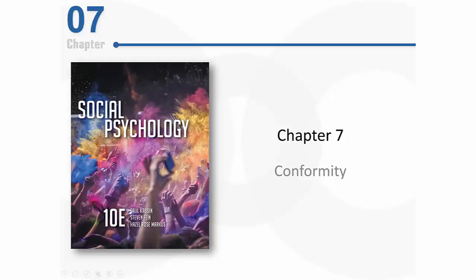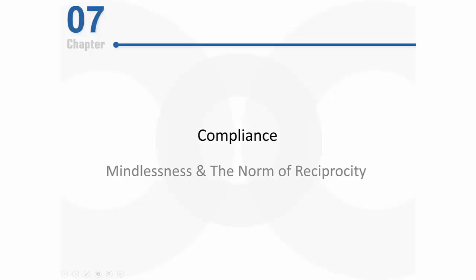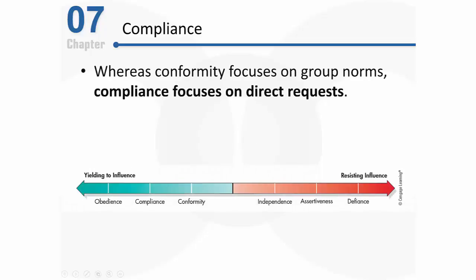Welcome back everybody. Let's continue to discuss this chapter on conformity, but this time let's kick the pressure up a notch. In the next several sections let's discuss compliance, and along the way we'll talk about mindlessness and the norm of reciprocity and how they help explain compliance. Previously we talked about conformity, and whereas conformity focuses on unspoken, often unstated group norms, compliance is different because it focuses on our reactions to a person's direct requests.